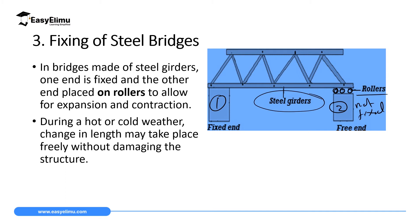The reason why one end is placed on rollers is to allow room for expansion and contraction. When the temperature is very high, the steel girders expand and the rollers roll out, so the bridge moves outward. When it gets cold, the girders contract and the rollers allow the bridge to move freely inwards. Through this, the bridge can expand and contract easily, hence avoiding breakage of the steel girders.